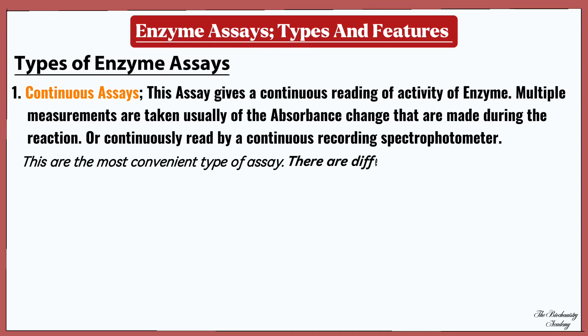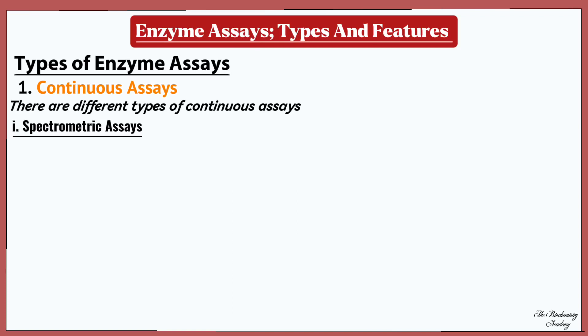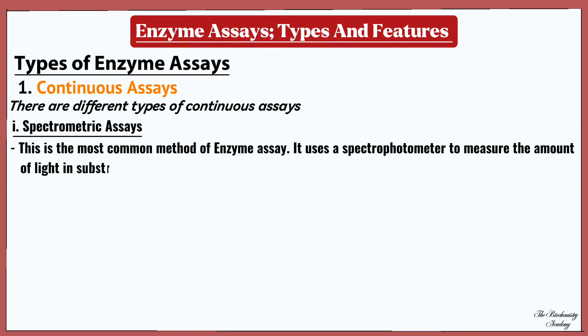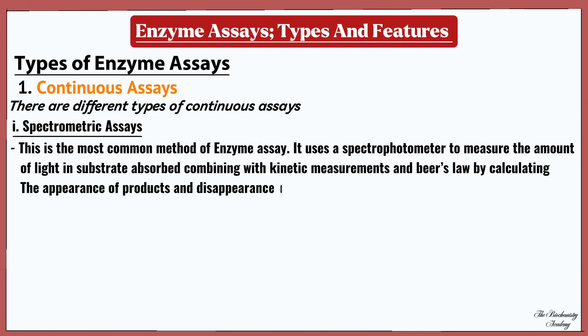There are different types of continuous assay. The first is the spectrophotometric assay, which is the most common method of detection. This type uses a spectrophotometer to measure the amount of light a substrate absorbs, combining kinetic measurement and Beer's Law by calculating the appearance of products or disappearance of substrate. This assay is simple and non-destructive.